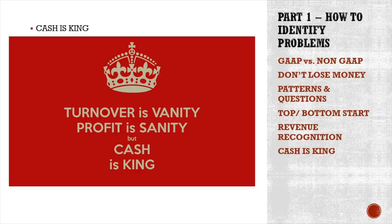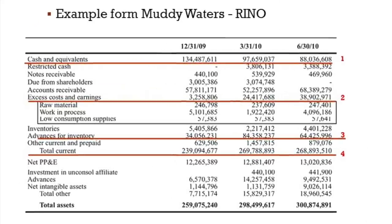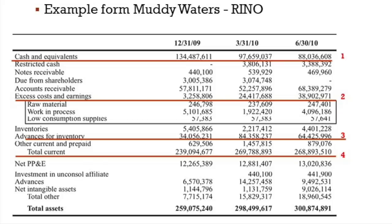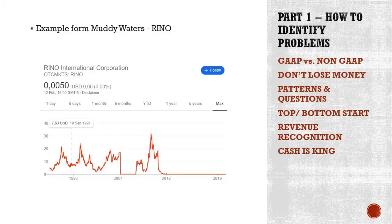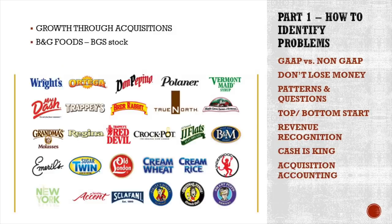Here's a Muddy Waters example with Rhino stock. After getting $100 million from their IPO, cash quickly went down over coming quarters. They had excess costs, and earnings went up 10x — based on who knows what. Total current assets were pretty stable at around $240-270 million, total assets also growing — everything looked fine. But advances for inventory jumped from $34 to $64 million, revealing oddities. The result was the stock going to zero as Muddy Waters exposed them.